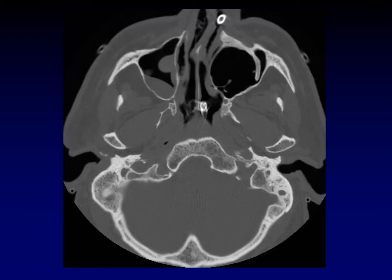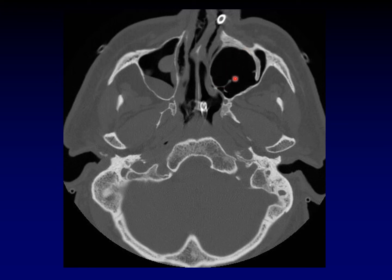Pneumosinus dilatans is an odd disease. It looks a lot like a mucocele would look, with expansion of the walls of the sinus and a spherical configuration to the sinus. But instead of being filled with mucus, this sinus is filled with air. Presumably this is some ball-valve effect that is causing the sinus to dilate, and you can imagine the mass effect upon the orbit in the same way that a mucocele would have.